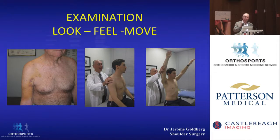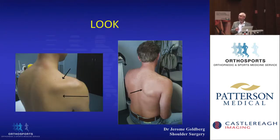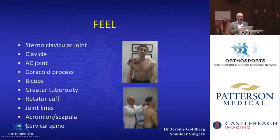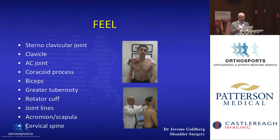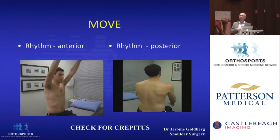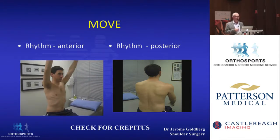When we examine a patient, we look, we feel, we move. When we look, we're looking for wasting of the spinatus muscles and deltoid, any prominence of the scapula, and any bruising. If you see a patient with bruising down the arm, they either have a fracture or an acute rotator cuff tear. Look at the biceps to see if it's ruptured. Then we feel all the structures to determine where the pain is — with capsulitis or arthritis, the joint line about the biceps tendon and rotator cuff. You always need to feel the acromion, scapula, and cervical spine.